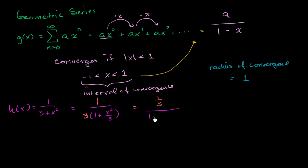So 1 minus—let me write our common ratio here in yellow—1 minus negative x²/3. Now we've written this in that form.